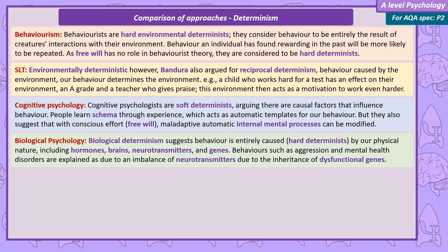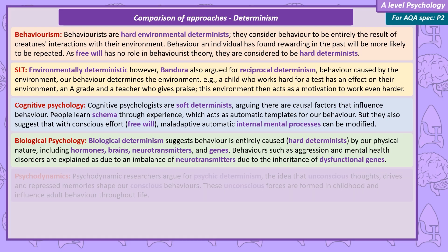Biological determinism is the idea that our behaviours are caused by our physical nature, including hormones, brain structures, neurotransmitters, and genes. Behaviours such as aggression and mental health disorders like OCD can be explained by an imbalance of neurotransmitters due to the inheritance of a dysfunctional gene. As there is no role for free will in biological theory, they are seen as hard determinists.